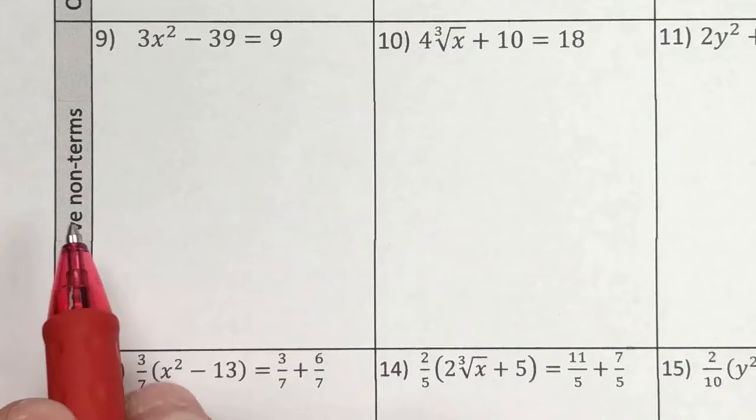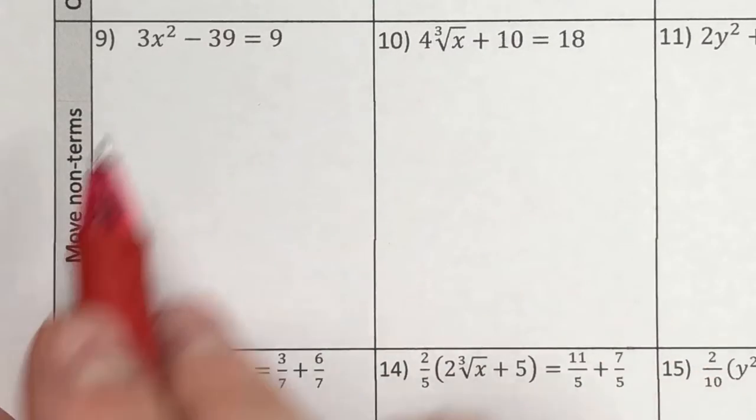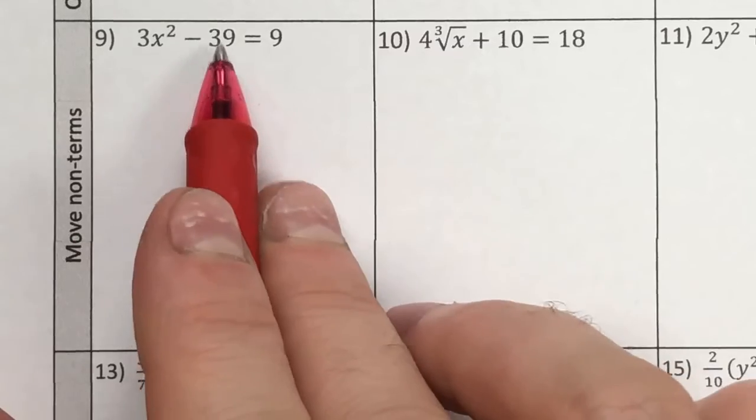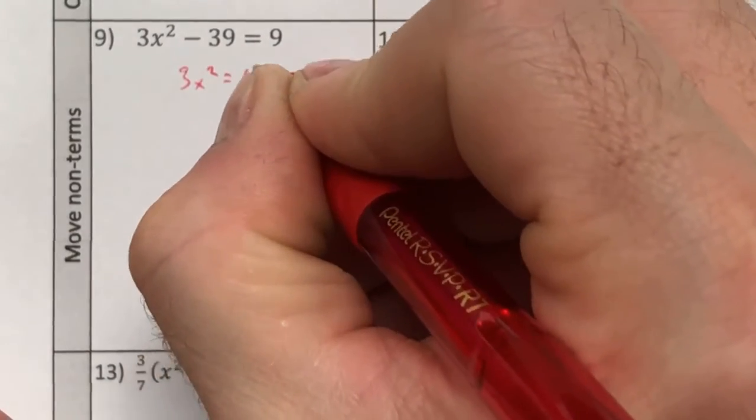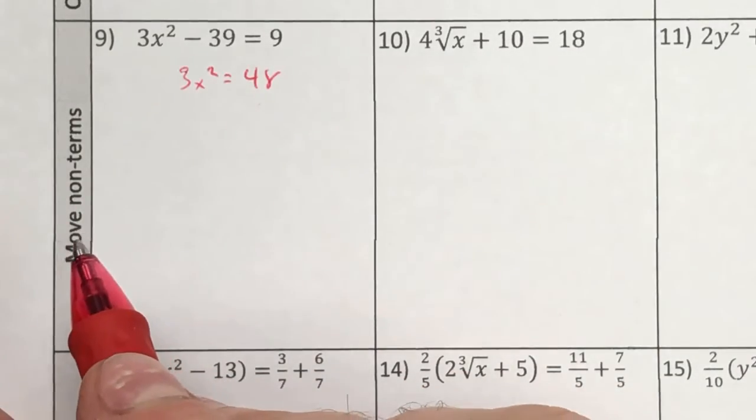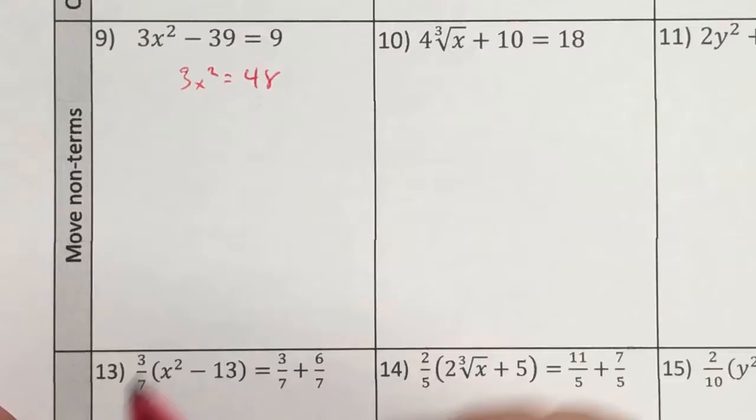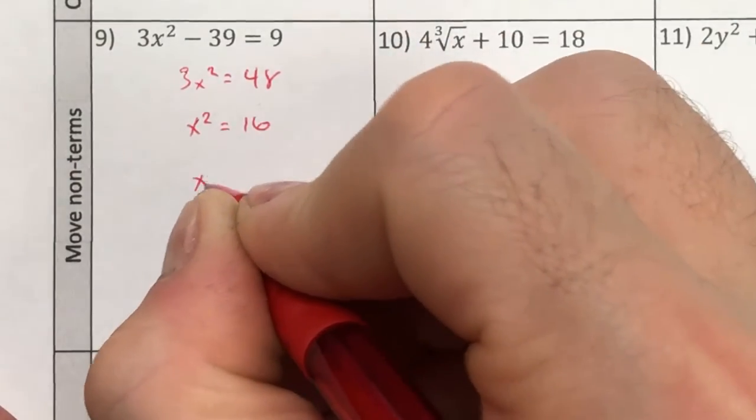So the next thing, the first step we're going to do is if we see an equation like this, we move the non-terms. If we're solving for x, that doesn't have an x, move it away. So 3x squared is equal to 48. Then we go ahead and after the non-terms, we clear the coefficient. Then clear the index. So coefficient be gone, index be gone.